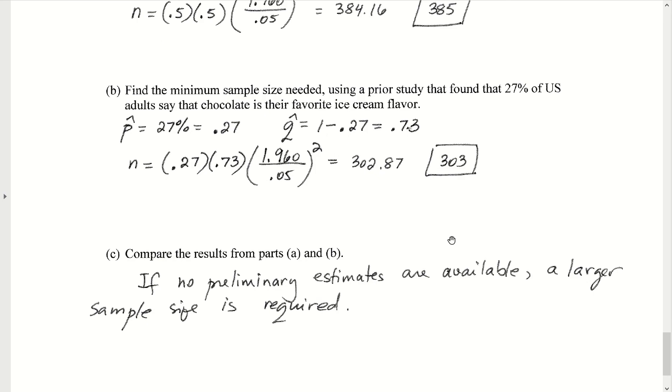Let's rework the problem, but suppose we actually have a preliminary study with information that says a sample proportion of individuals found that 27% or 0.27 say that chocolate was their favorite ice cream flavor. So here we do have a preliminary estimate for the population proportion. Our p-hat value would be 27%, which is 0.27. Our q-hat is always 1 minus p-hat, so 1 minus 0.27 would be 0.73.